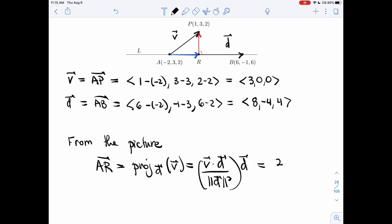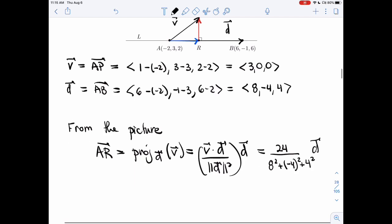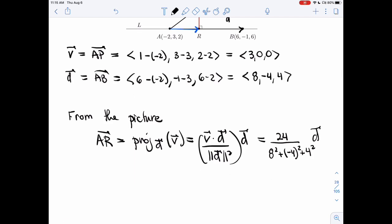And then I have 8 squared plus minus 4 squared plus 4 squared times D. So I'm getting 24 over 64 plus 16 plus 16, that's 96, times D.